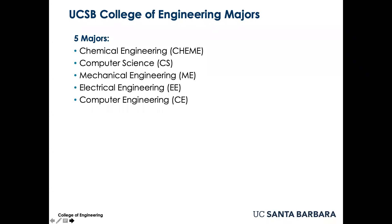There are five majors in the College of Engineering: Chemical Engineering, Computer Science, Mechanical Engineering, Electrical Engineering, and Computer Engineering. Students who are admitted to one of these majors but wish to change their major to another major within the College of Engineering must follow the same procedures as students who are admitted to a major outside of the College of Engineering.